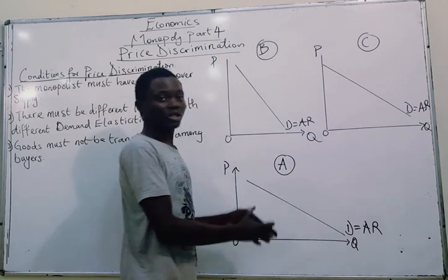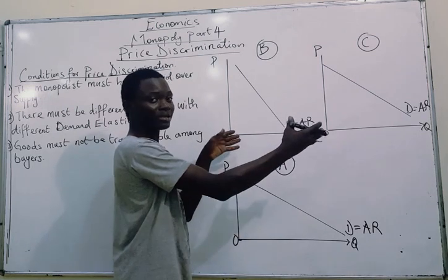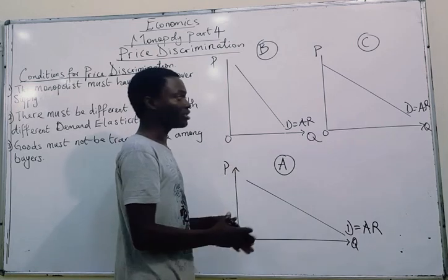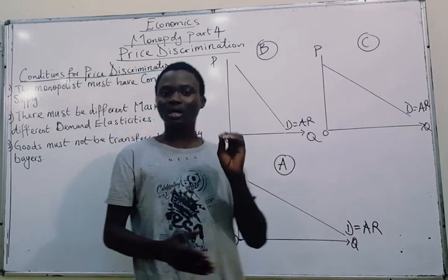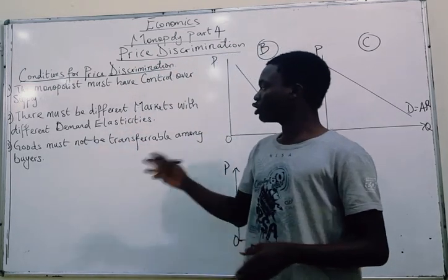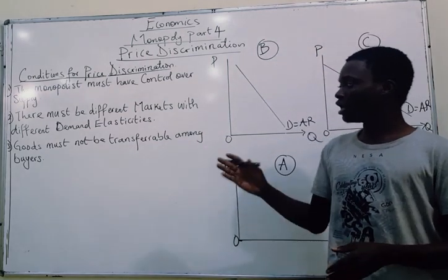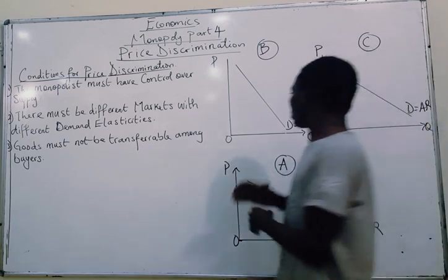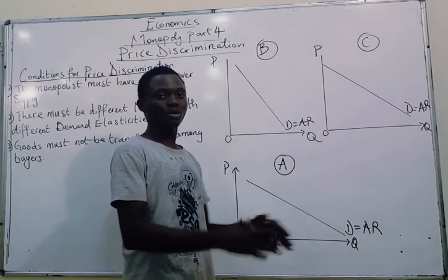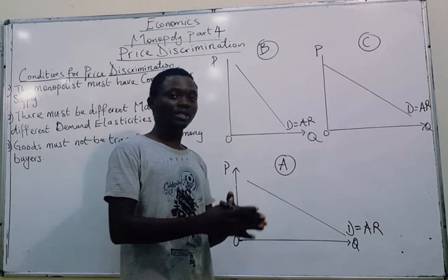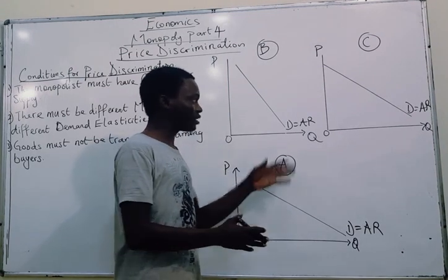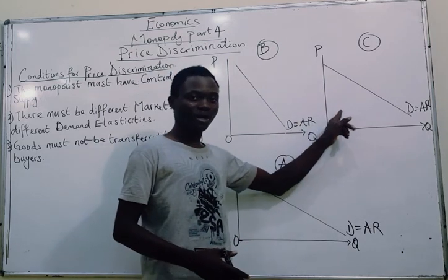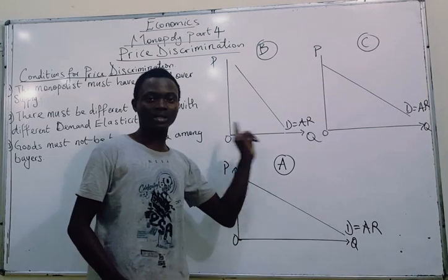The third condition that must be fulfilled is: goods must not be transferable among buyers. This means that those who buy at a low price — after the monopolist has successfully segmented its market — must not be able to come into the higher-price market to sell at a higher price.